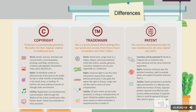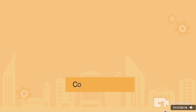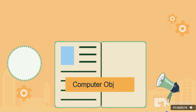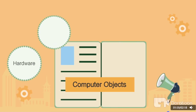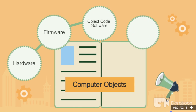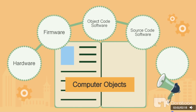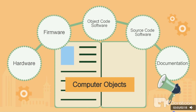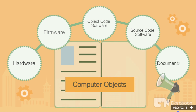Sources from LegalWiz. Protection for computer objects could include hardware, firmware, object code software, source code software, and documentation.